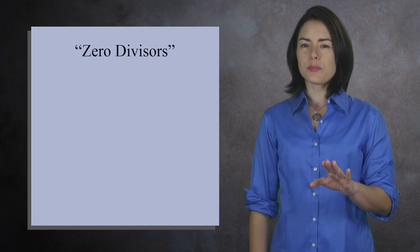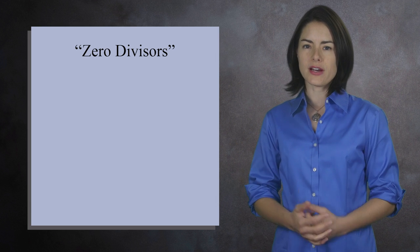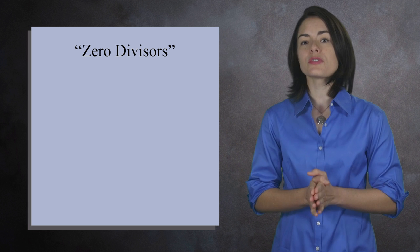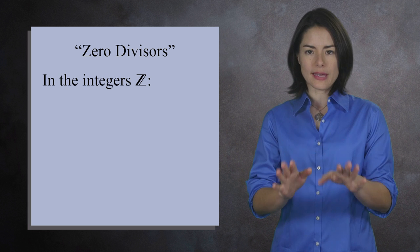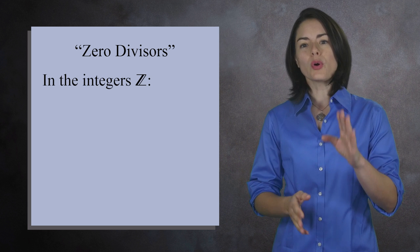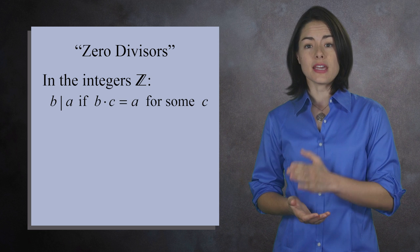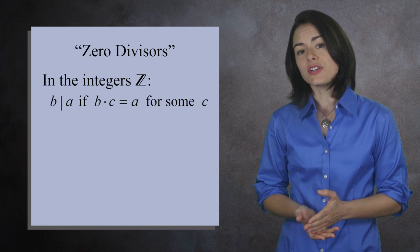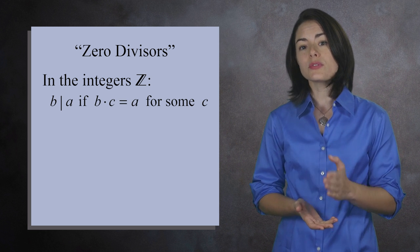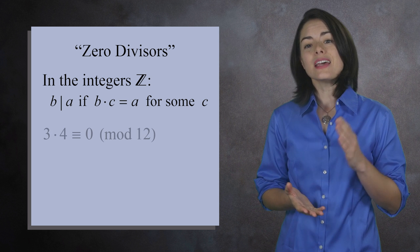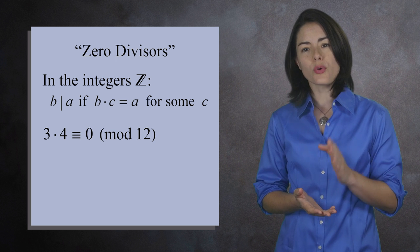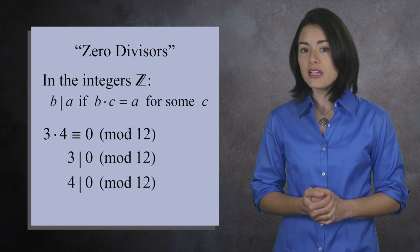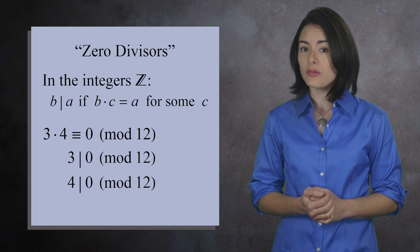The term 'zero divisors' was chosen because division can be defined in terms of multiplication. For example, when working with integers, we say b divides a if b times c equals a for some integer c. By this definition, the term zero divisors makes sense. In the integers mod 12, 3 times 4 equals 0, so both 3 and 4 divide 0 — they really are zero divisors.